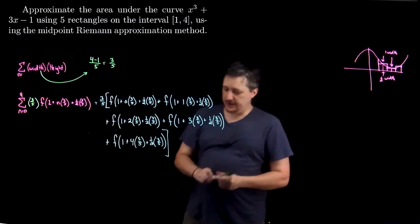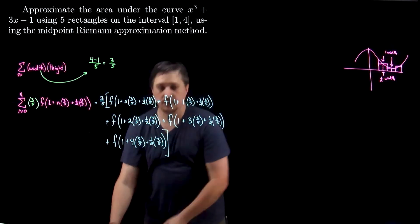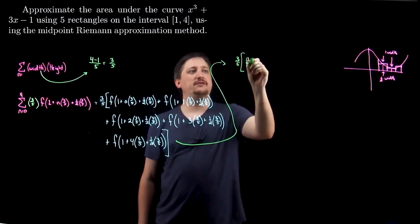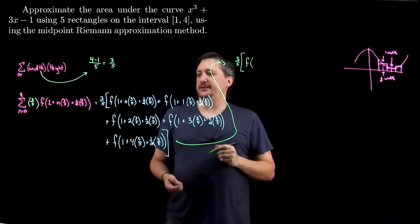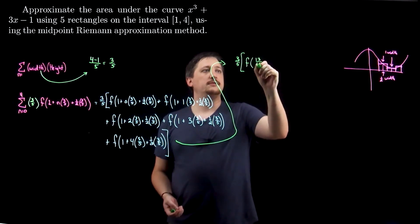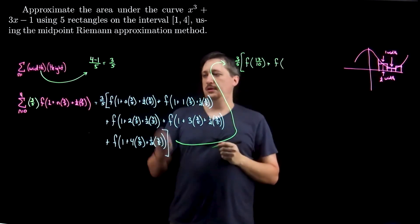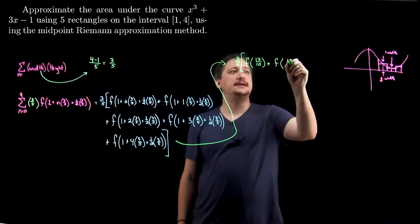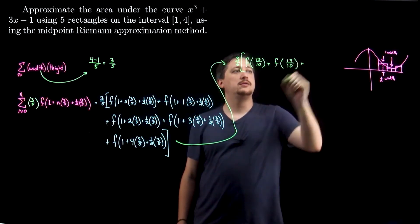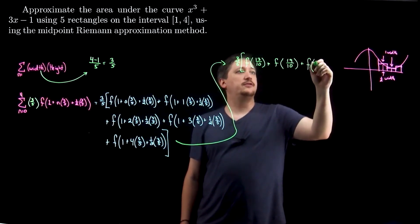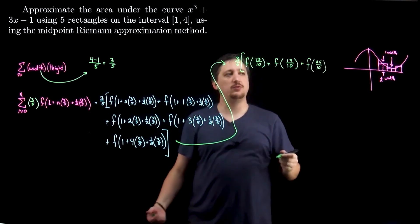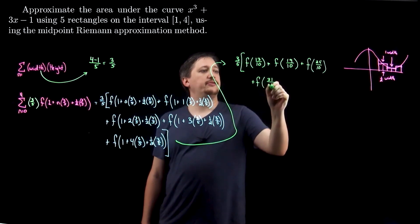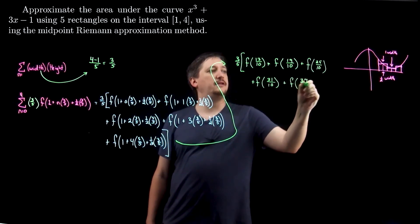Now I'll clean up all the inside terms. So I'll have 3 fifths times: f of 13 tenths — since 1 plus half of 3/5 is 3/10, plus 1 is 13/10 — then f of 19 tenths — 13/10 plus 6/10 — then f of 25 tenths (which I could simplify to 5 halves), plus f of 31 tenths, plus f of 37 tenths.